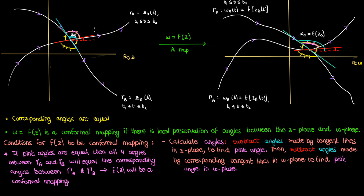As I mentioned earlier, I need to use the tangent lines to find these pink angles, but how do I calculate the tangent lines? I can take the derivative of z_a and z_b with respect to t to find the tangent lines in the z-plane, and then take the derivative of w_a and w_b with respect to t to find the tangent lines in the w-plane. Remember, tangent lines are found by simple differentiation of curves with respect to their parameters. So once we calculate these angles using equations that relate these tangent lines to each other, we'll be able to come up with conditions for f of z to be a conformal mapping.